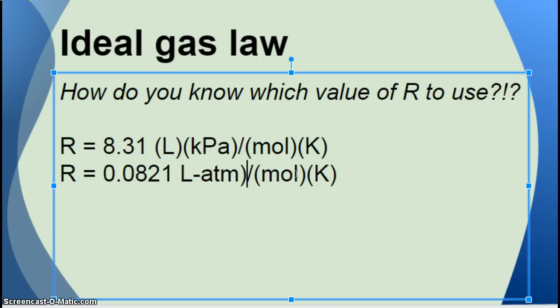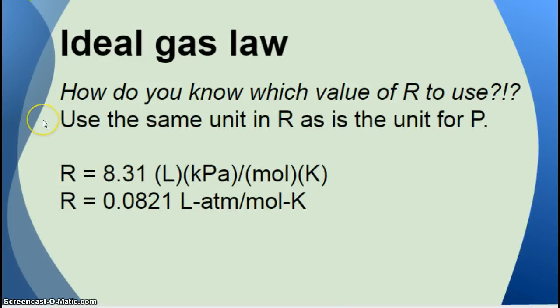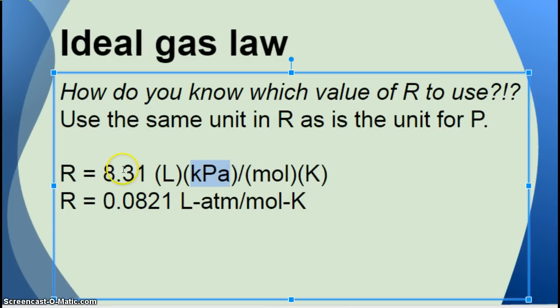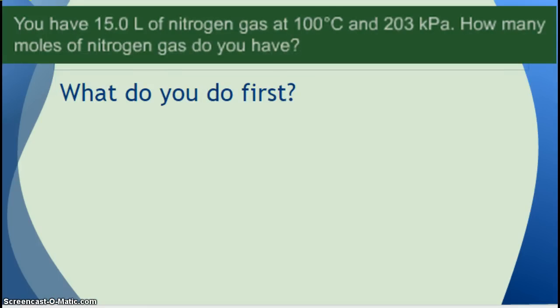The only thing that's different is the unit for pressure. So that's your clue. The unit for pressure is your clue. You use the same R as the unit for pressure. So if we're using kilopascals, then for R you use 8.31. If we're using ATM or atmospheres for pressure, then you have to use 0.0821. Again, you do not have to memorize these numbers. They will always be given to you. You just need to know which one to put in your equation.